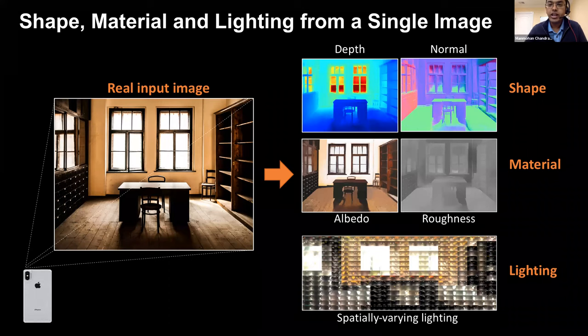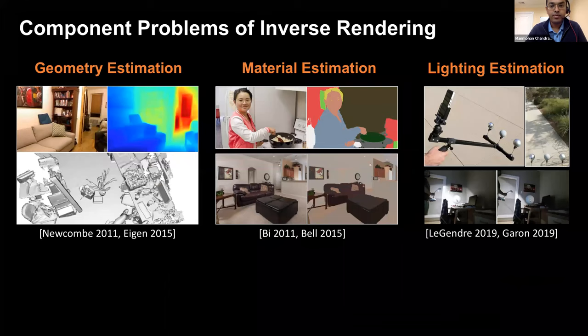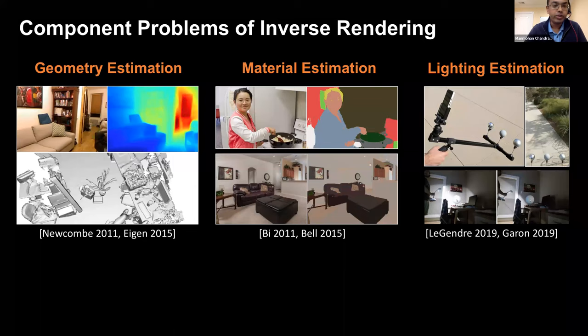To handle such complex effects, we tackle the following problem: given a single input image of an unconstrained scene, we wish to estimate the shape, the spatially varying material, and the spatially varying lighting. This is a very hard problem even with multiple images as input. Each of these component problems — geometry, material, and lighting estimation — have had extensive lines of work in computer vision, and our goal is to attempt to solve all of these challenges together.